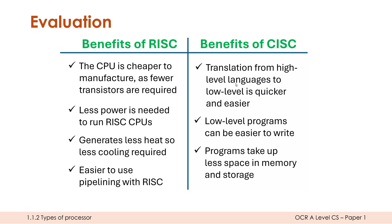One consequence is that a RISC program written in assembly or machine code is usually much longer than the equivalent CISC program. This means CISC programs take up less memory space or storage space, so you may not need as much RAM with a CISC processor as you would with a RISC processor. The more of the course you study, the easier it becomes to piece all of this together — it will make more sense as you connect it with other topics you'll be learning about soon.